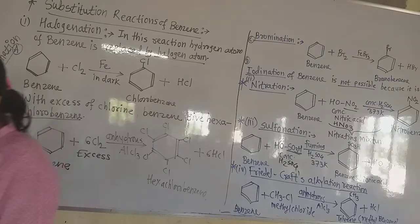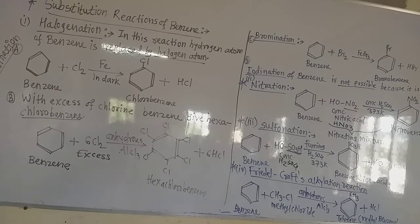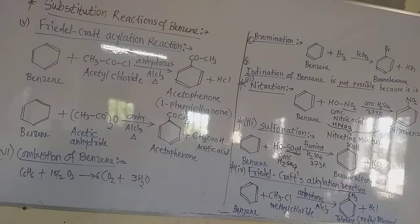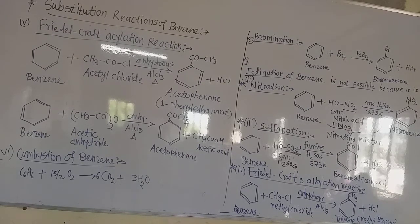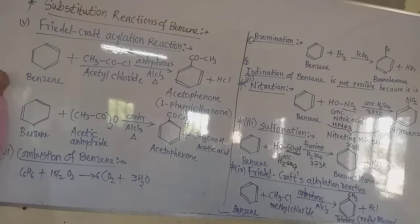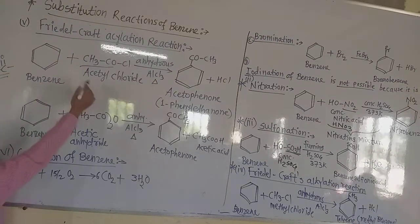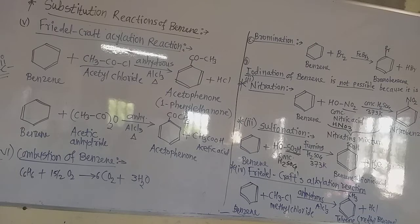Now let us see the fifth reaction: Friedel-Crafts acylation. As the name suggests, there is introduction of the acyl group, also called the acetyl group. The acetyl or acyl group is CH3CO–. This group is called the acyl or acetyl group, and it is introduced into the benzene ring in place of the hydrogen atom.